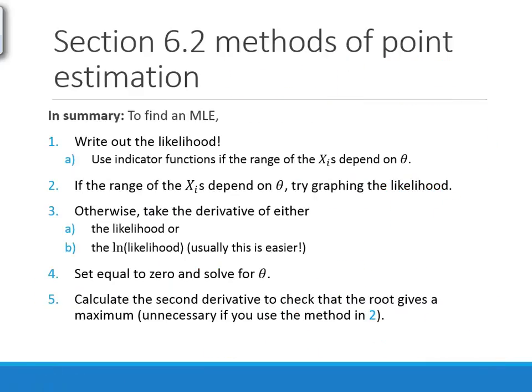Summary of finding a maximum likelihood estimate: Step 1 — write out the likelihood, using indicator functions if the range of the x's depends on theta. Step 2 — if indicator functions are present, graph the likelihood. Otherwise, take derivatives of the likelihood or log-likelihood, set equal to zero, solve for theta. Step 3 — verify you have a maximum by checking the second derivative is less than zero. Note: Step 3 is unnecessary if you used the graphical method.